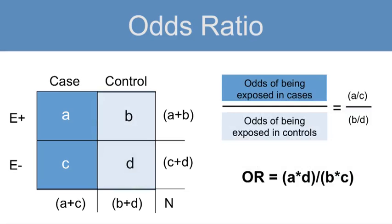As I said before, in a case control study, the odds ratio is the exposure odds ratio, which is the odds of being exposed in the cases equals A divided by C divided by the odds of being exposed in the controls, or B divided by D.